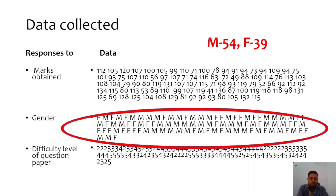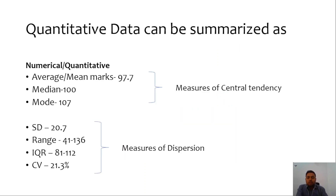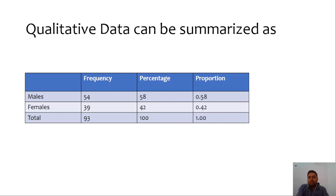The third variable — difficulty level of the question paper — is a sub-kind of qualitative or categorical data in which there is an inherent order. It is known as ordinal data. So there are different ways of summarizing different kinds of data. Numerical or quantitative data can be summarized with the help of measures of central tendency and measures of dispersion, as shown in this slide. Qualitative data can be summarized as frequencies, percentages, or proportions.